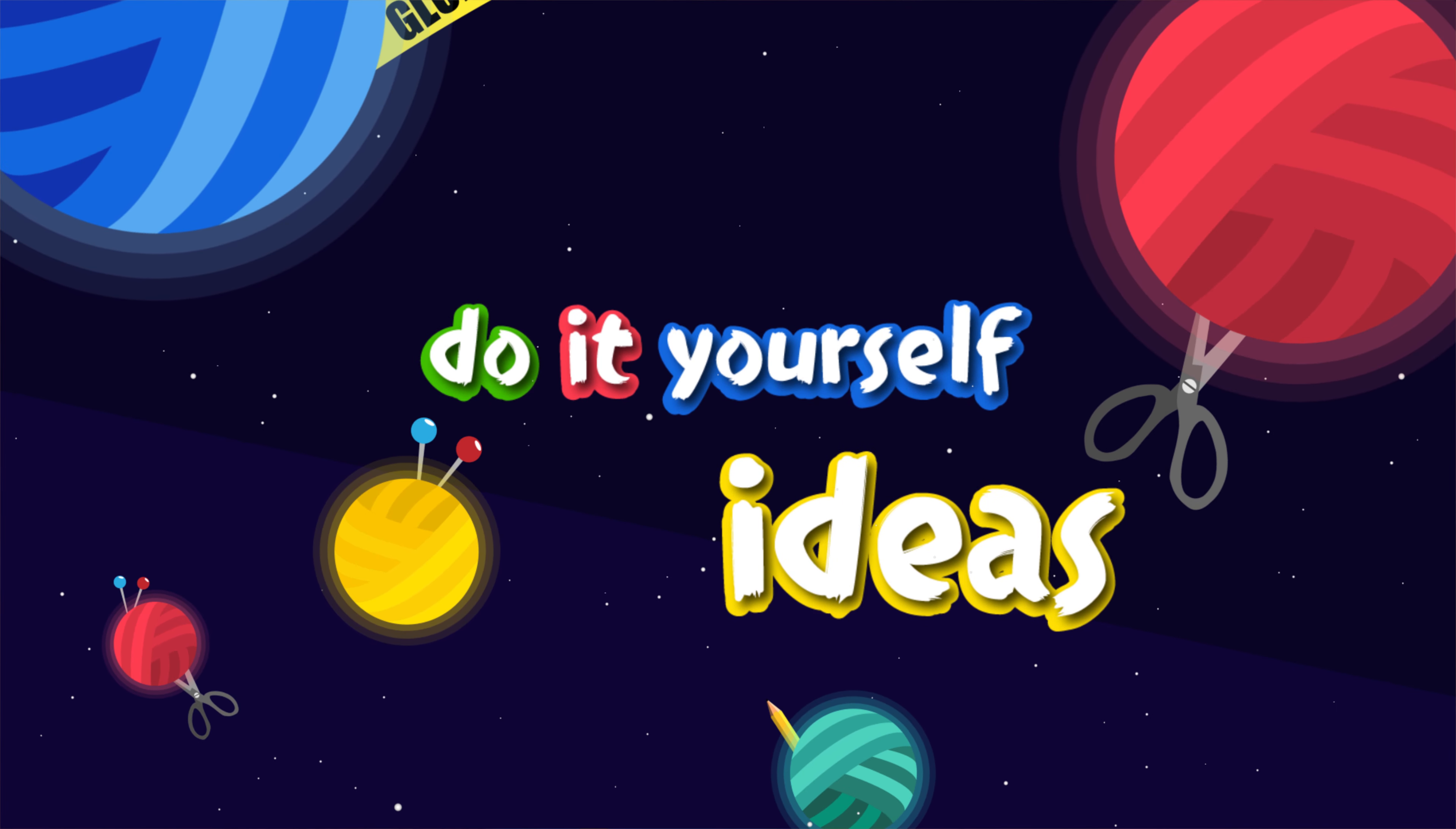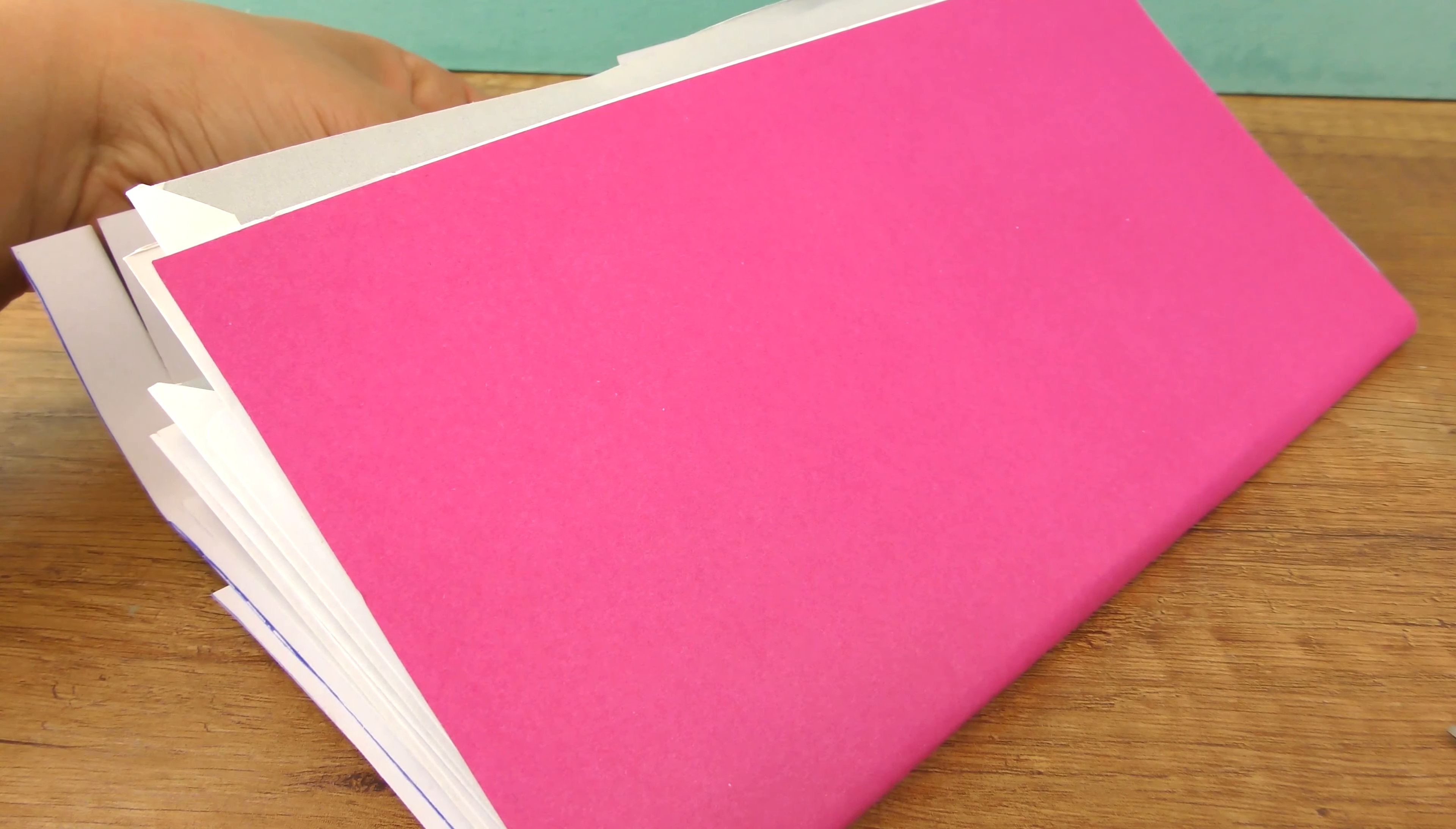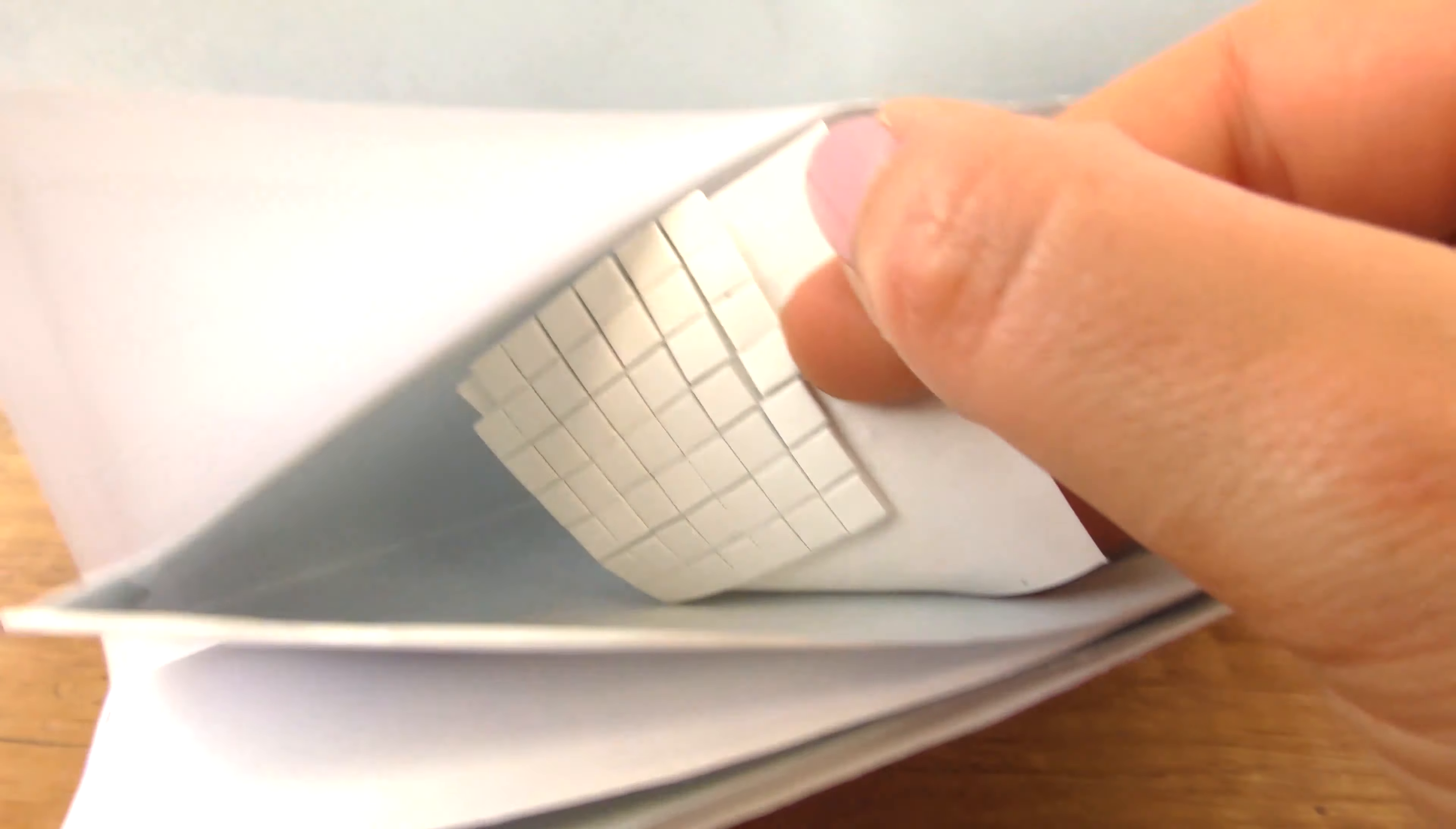Hi, welcome to DIY ideas. Today we're doing what to do when you're bored projects. Our first idea is for sorting stuff out. I made this lovely file for sorting your stickers like I did here, or your other pieces of paper or even putty. It's for pretty much anything you want.